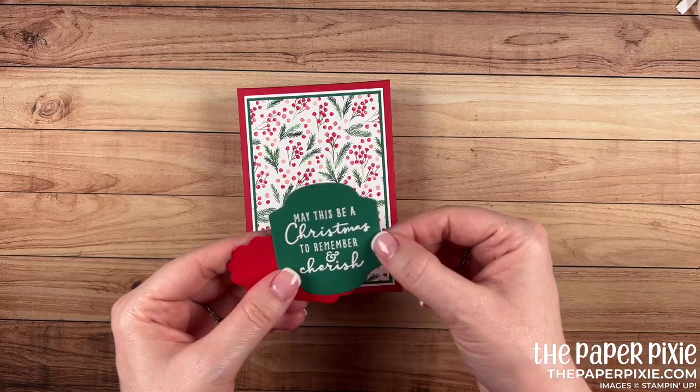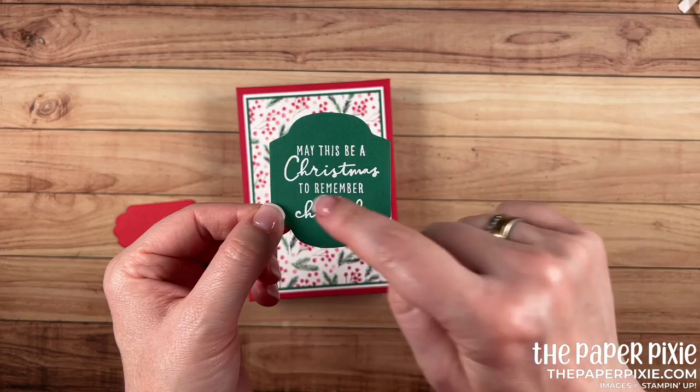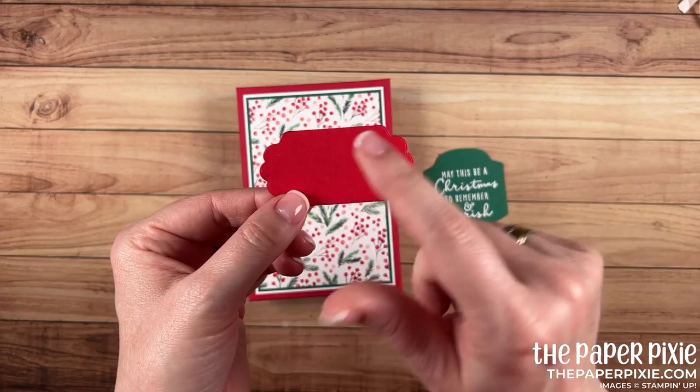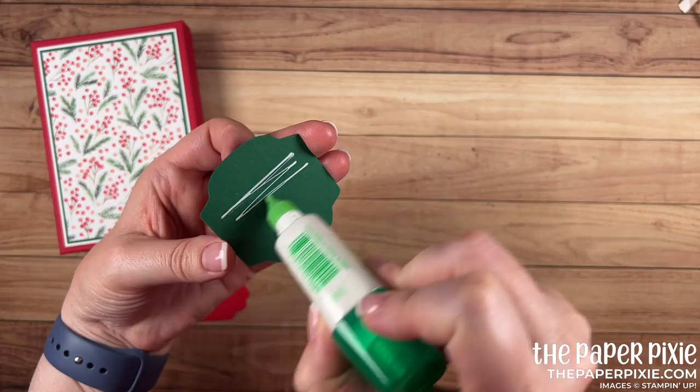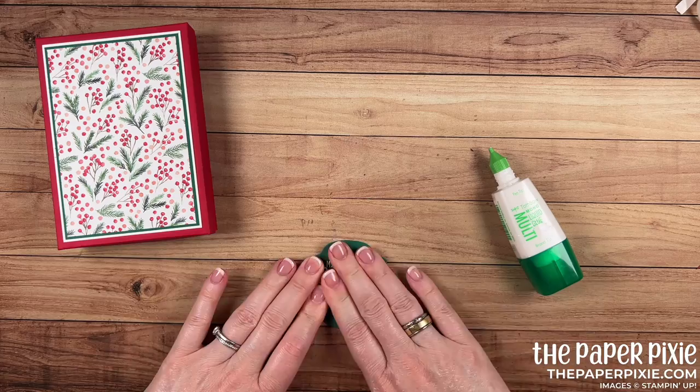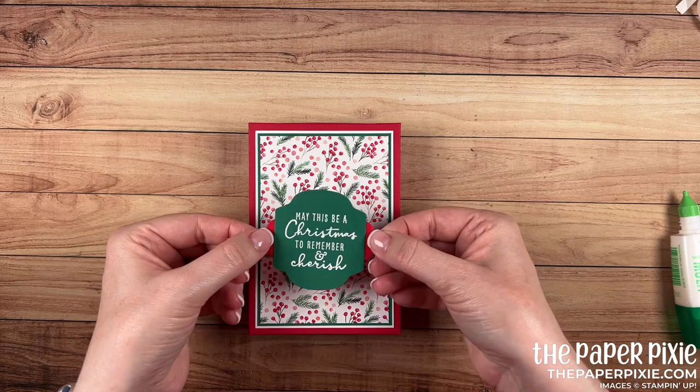Now to decorate the box I have done this ahead of time to save time. I heat embossed in white a sentiment from the Christmas to remember stamp set and die cut that from the seasonal labels dies. And then I die cut a piece using the seasonal labels dies out of real red. So shaded spruce and real red. I'm just going to layer these two pieces. So put a little bit of glue in the center of that and then layer that right over the real red piece. And I'm going to use five dimensionals on the back.